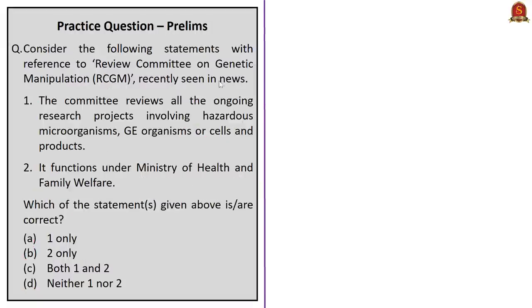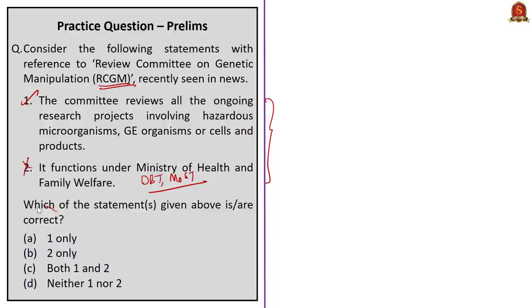The next question is with reference to the Review Committee on Genetic Manipulation. Two statements are given. The first statement — it reviews all ongoing research projects involving hazardous microorganisms, genetically engineered (GE) organisms or cells and products — is correct. The second statement — it functions under the Ministry of Health and Family Welfare — is incorrect, because this committee functions under the Department of Biotechnology under the Ministry of Science and Technology. The question asks for the correct statements, so the correct answer is option A — one only.